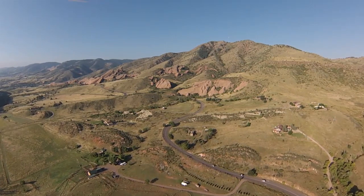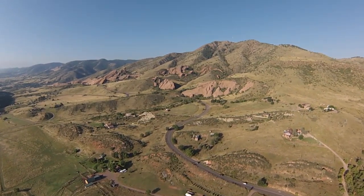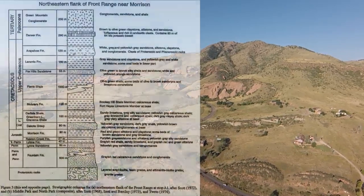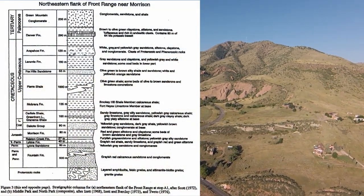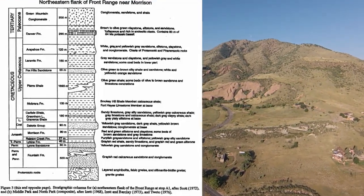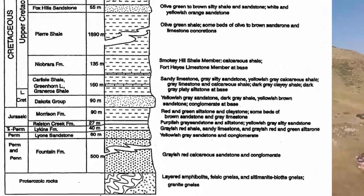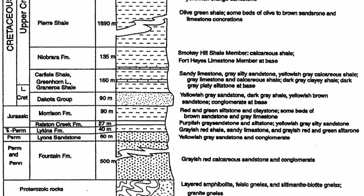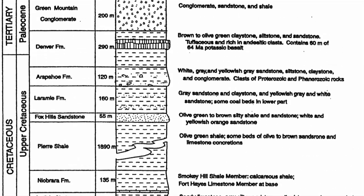Welcome back geology fans. With all the tilted, folded, and altered rock out there, it would be helpful to have a guide to the original order and position of rock units. As the main principle at play here is the law of superposition, it is easiest to represent the rock units in order as a vertical column with the oldest rocks at the bottom and the youngest at the top, which is known as a stratigraphic column.